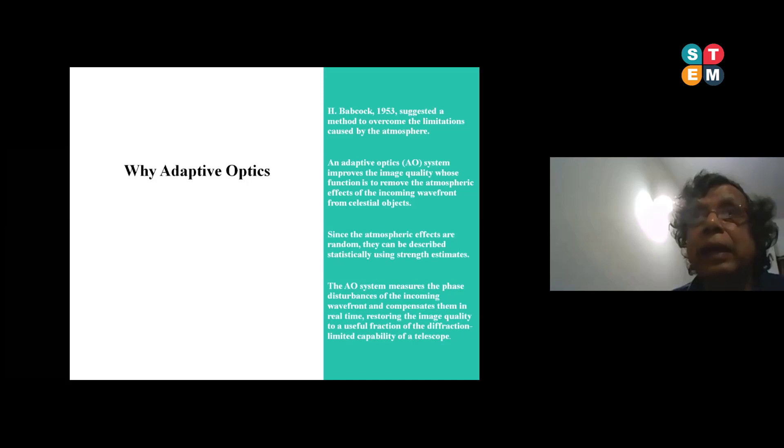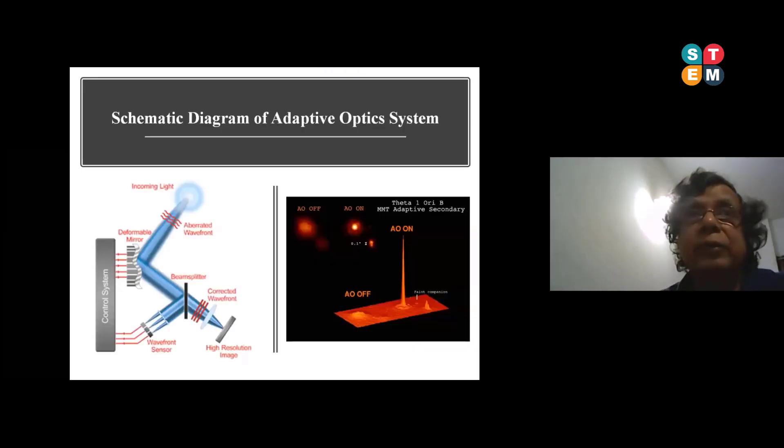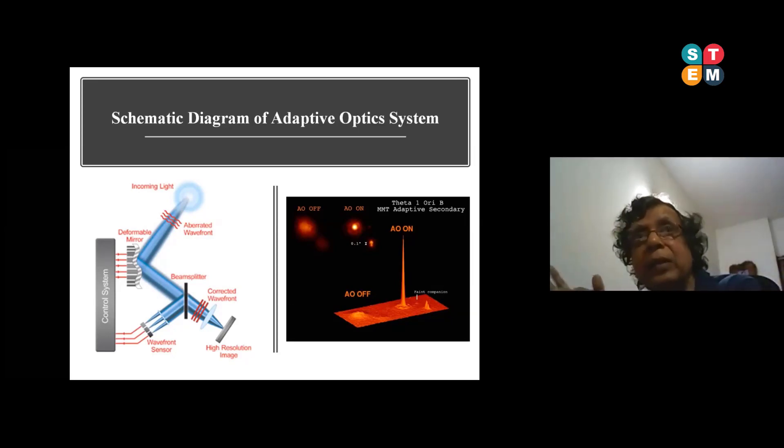In the 90s, the adaptive optic system came. It is nothing but the same atmospheric turbulence you correct it online. The pattern which is giving disturbance, the waveform pattern, you calculate the other way - the anti this one - and then you will get a plane waveform. For that you require a deformable mirror and it has to run very fast at the speed of the freezing time of the speckle. Then you correct it in that process. You have a wavefront sensor to calculate the r0 size. Depending on that you have to run deformable mirror, and then corrected wavefront will come here. You can see that when AO is off, this kind of structure you get. When it is on, the sharp image is coming.